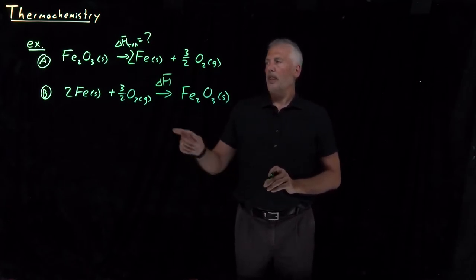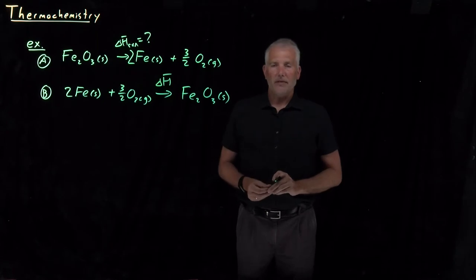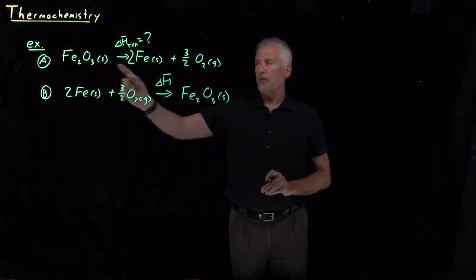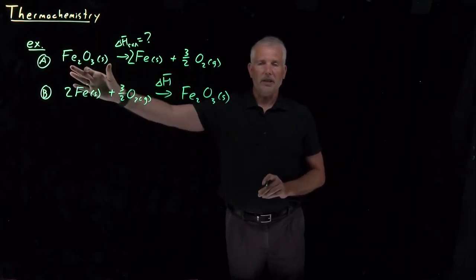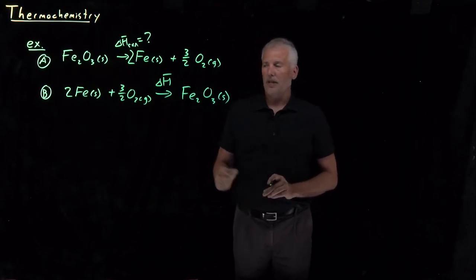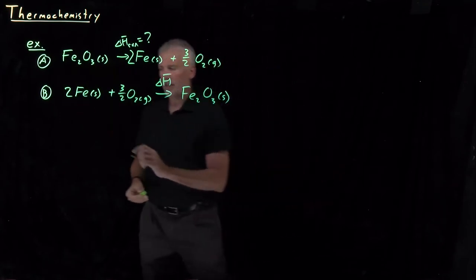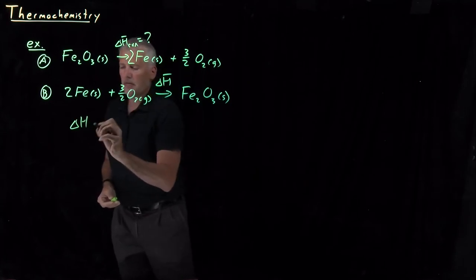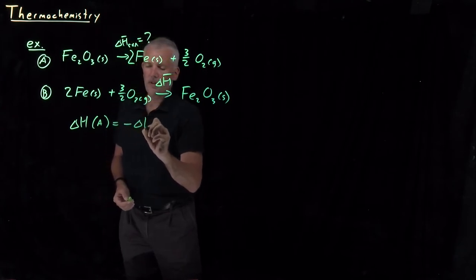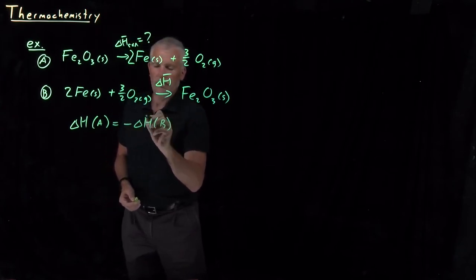But since we know that enthalpy is a state function, the difference in enthalpy between these products and reactants is exactly the negative of the enthalpy change between these products and these reactants. So what that means is delta H for reaction A is the negative of delta H for reaction B.